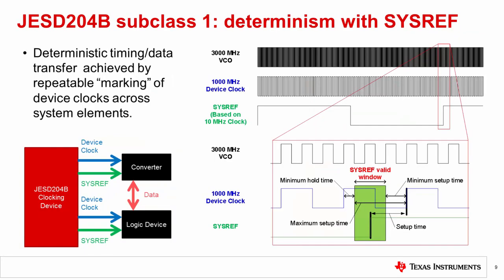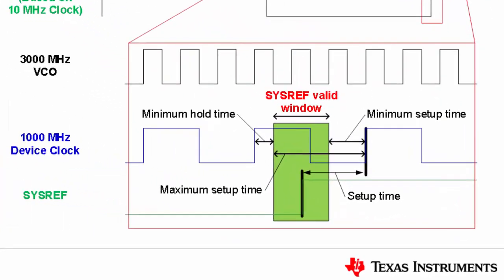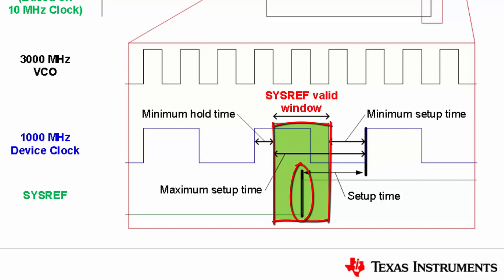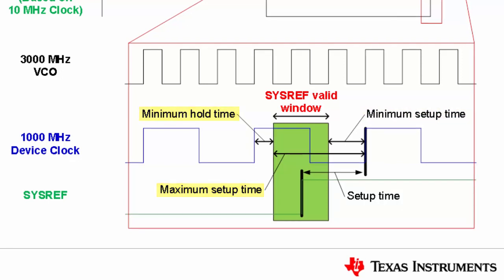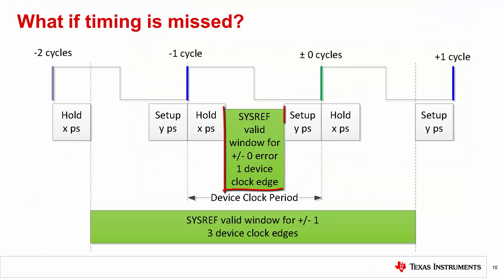For JESD204B subclass 1 to achieve determinism, the sysref signal must deterministically mark the same device clock rising edge from power-up to power-up, relative to all other device clocks and sysrefs in the system. This is the key point to JESD204B clocking and is achieved by positioning a rising edge of sysref inside the sysref valid window. The sysref valid window is defined by a minimum and maximum setup time for each device. Typically, the maximum setup time is considered as the device clock period minus the hold time. Normally, the sysref edge is designed to be inside the sysref valid window and no errors occur in marking the expected device clock. But what happens if the setup and hold time are violated and a different device clock edge is marked?